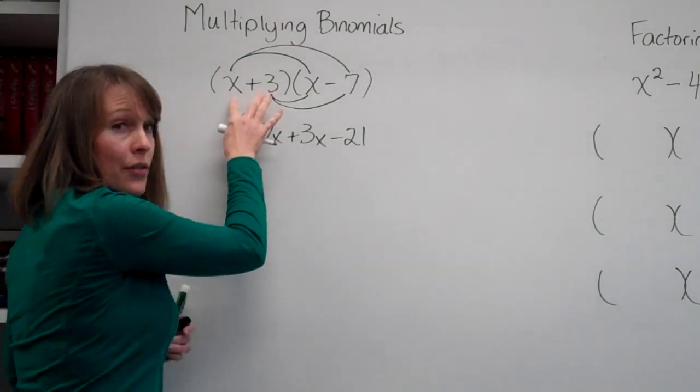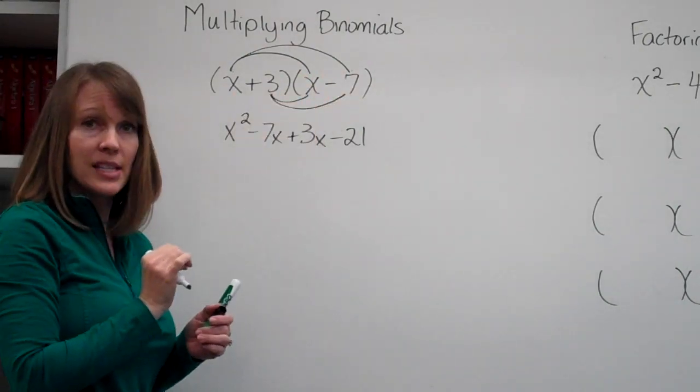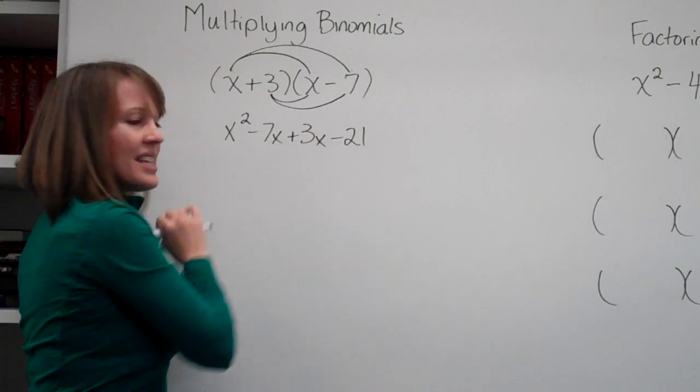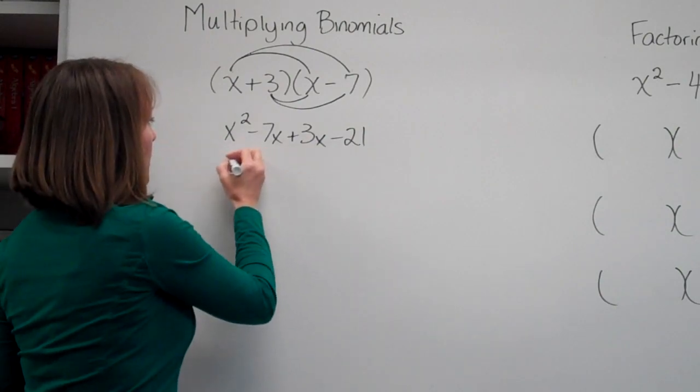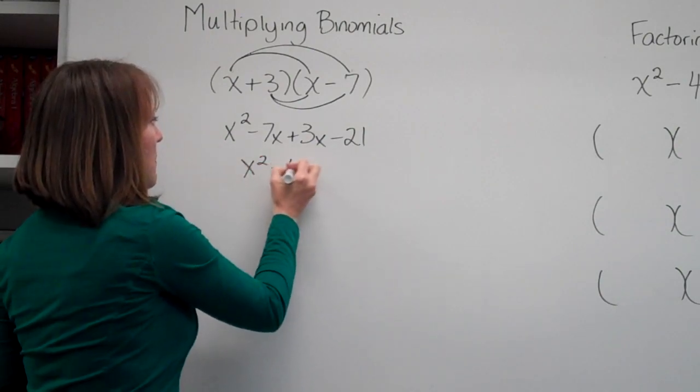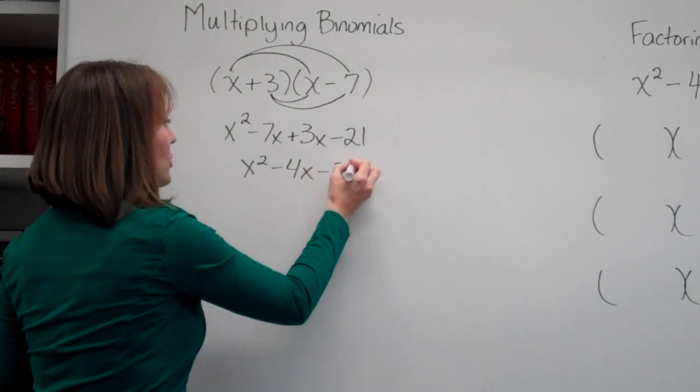So we multiplied everything in the first parentheses with everything in the second parentheses. These are common terms, so that would simplify to x squared minus 4x minus 21.